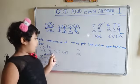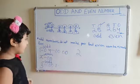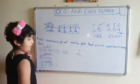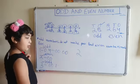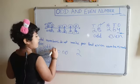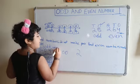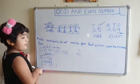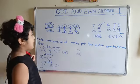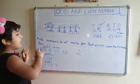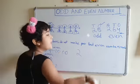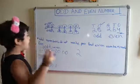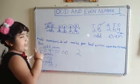Four — यह एक pair और यह एक pair. यह एक even number है. इस example के बाद यह साबित होता है कि odd numbers do not make pair, but even numbers make pair.